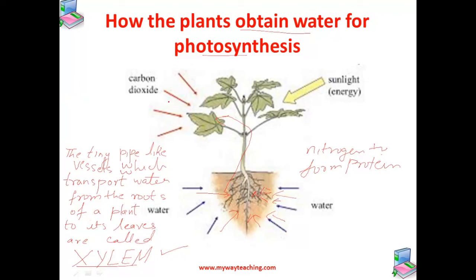To summarize: water and minerals — including nitrogen, phosphorus, potassium, and whatever other minerals are required — present in the soil are absorbed by the roots and transported to the leaves through interconnected xylem vessels present throughout the roots, stems, branches, and leaves of the plant.